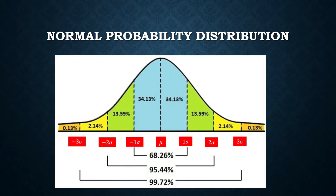Let us recall our understanding of a Normal Probability Distribution. It is a Probability Distribution that tells us the probabilities of each outcome in the sample space of an experiment. A Normal Probability Distribution is a Probability Distribution of a Continuous Random Variable such that when we plot each probability, it forms the shape of a bell.